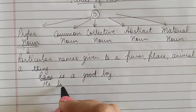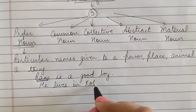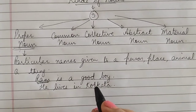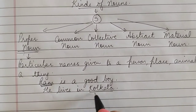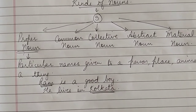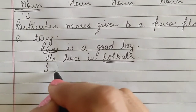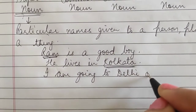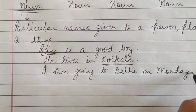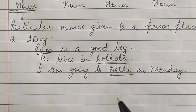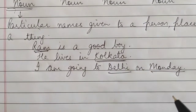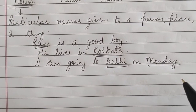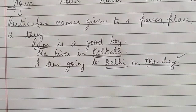Next example: he lives in Kolkata. Kolkata is the name of a city, a particular place. So here a name is given to a particular place, so Kolkata is also a proper noun. Next, I am going to Delhi on Monday. Delhi is the name of a particular place, so it is also a proper noun. Monday is the name of a particular day of the week, so this is also a proper noun.